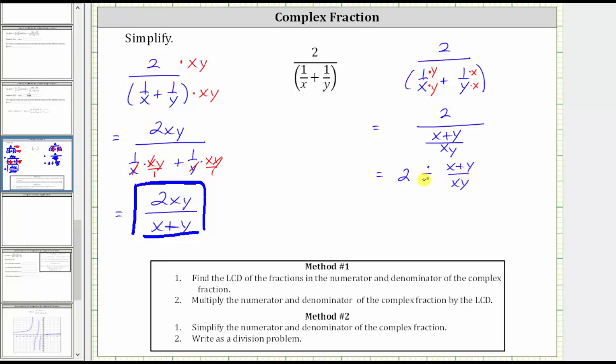And now let's write this division problem as an equivalent multiplication problem. Remember dividing by a fraction is equivalent to multiplying by the reciprocal. Let's also write two as a fraction with the denominator of one, and then we have times the reciprocal, which is xy over the quantity x plus y. And now multiplying, notice how we do have two xy over the quantity x plus y, and we get the same result.